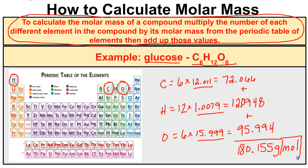The unit for molar mass is grams per mole. This answer means that if you have one mole of glucose — 6.02 times 10 to the 23rd molecules — all those molecules will have a mass of 180.155 grams. Let's try a few more problems, then you can try some on your own and check your answers at the end of this video.